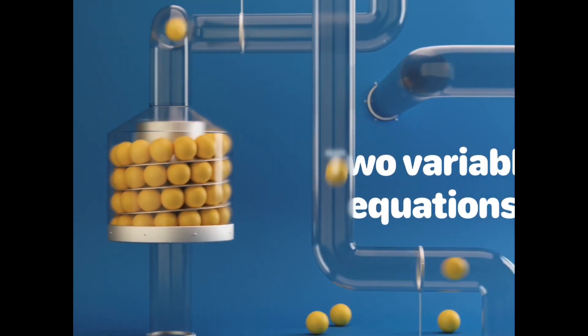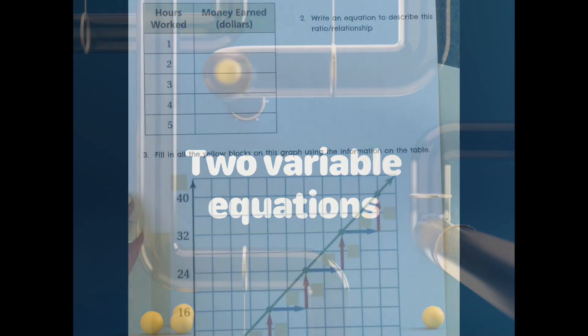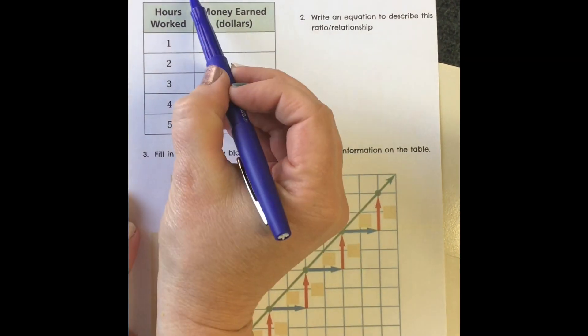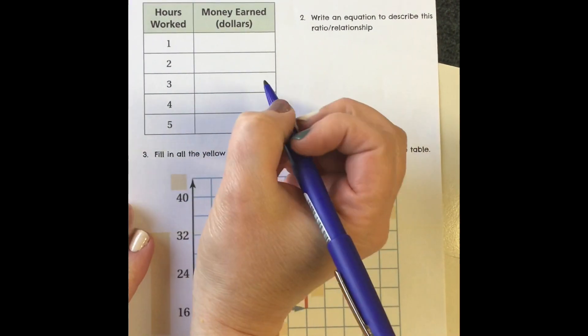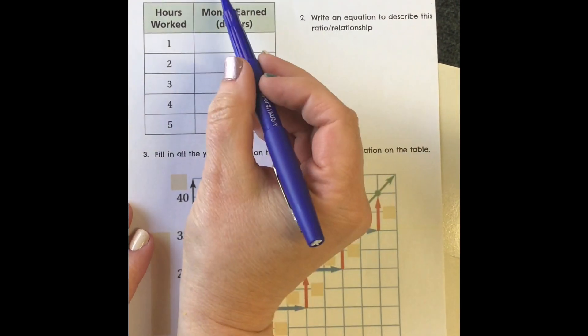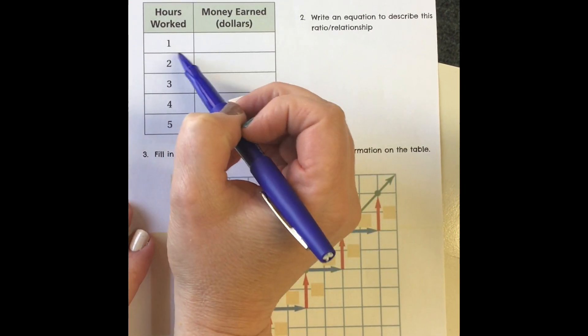Here we go. These are two-variable equations. First, we're told that you're going to earn $8 an hour. Complete this table to show how much money you earn for various times.